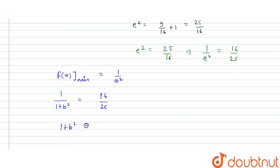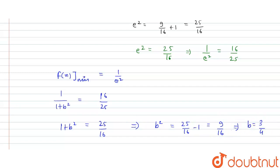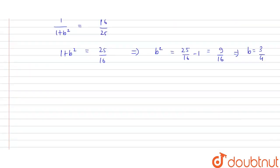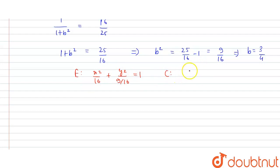Since the minimum value of f(x) equals 1/e², we have 1/(1+b²) = 16/25, so 1+b² = 25/16. Therefore b² = 25/16 - 1 = 9/16, and b = 3/4. Now the ellipse equation is x²/16 + y²/(9/16) = 1 and the circle is x² + y² = b² = (3/4)².